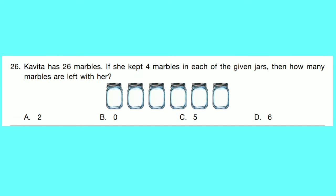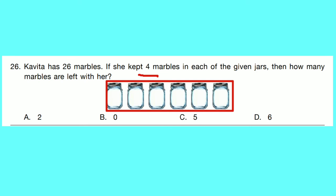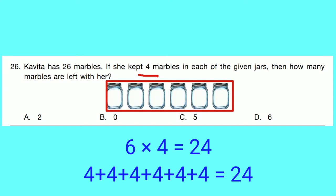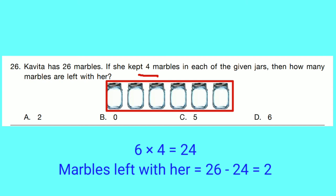Question number 26: Kavita has 26 marbles. If she kept 4 marbles in each of the given jars, how many marbles are left with her? There are 6 jars. Total marbles placed: 6 into 4 equals 24. Marbles left: 26 minus 24 equals 2. Option A is correct.